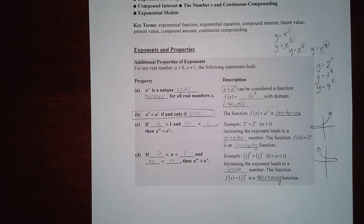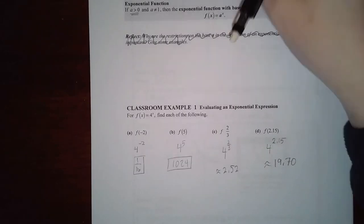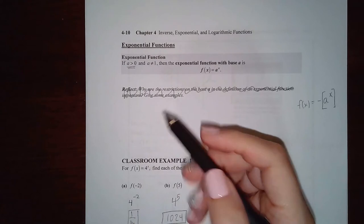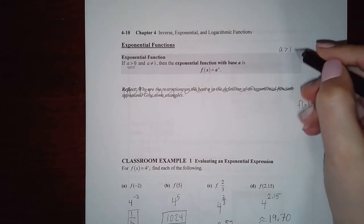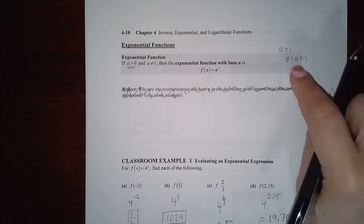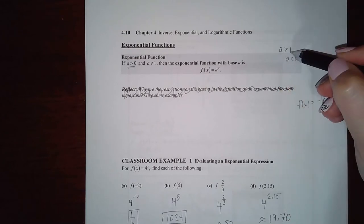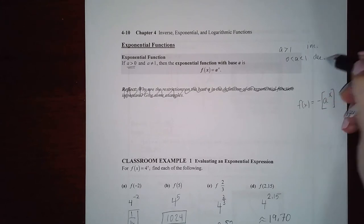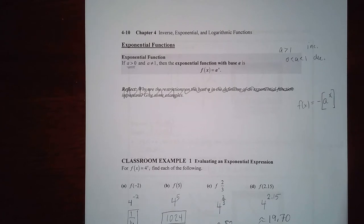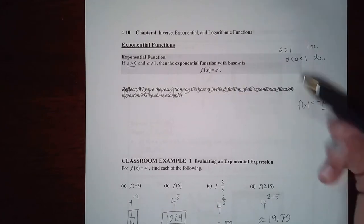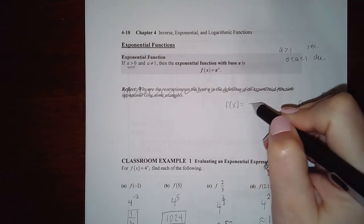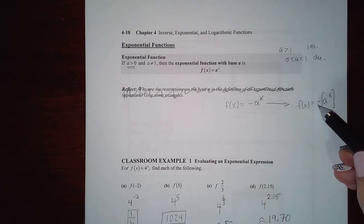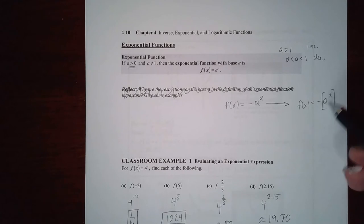For an exponential function, the base has to be positive. There's a difference between when the base is greater than one versus less than one, but it still has to be positive. When it's greater than one it's an increasing function, and when it's less than one it's a decreasing function. Note that a negative base is different from f(x) equals negative a to the x — that's just a negative coefficient times the exponential function, which has a positive base.